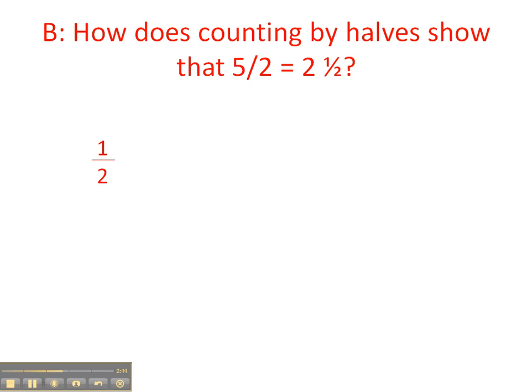Question B says, how does counting by halves help you show that five over two is equivalent to two and one half? Well, we can count halves and we can show how this will work. One half, and then another half added on is two halves, and then three halves, and four over two, five over two.